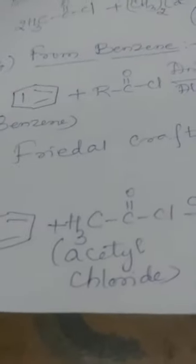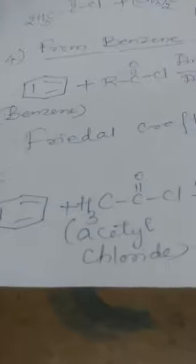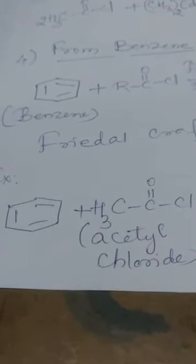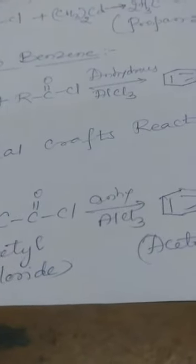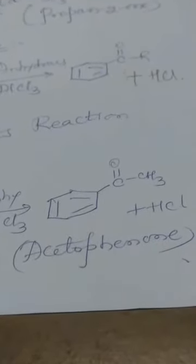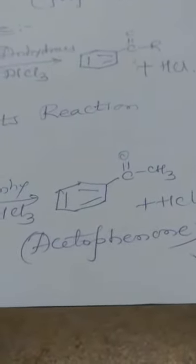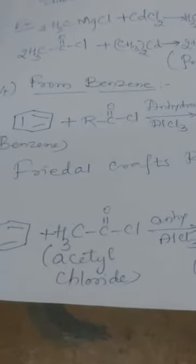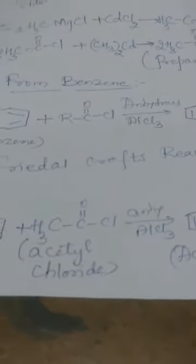For example, benzene reacts with acetyl chloride (CH3COCl) in the presence of anhydrous aluminum chloride catalyst. The product formed is the aromatic ketone acetophenone (C6H5-C=O-CH3) with the elimination of HCl. Remember, this is a named reaction called Friedel-Crafts acylation.